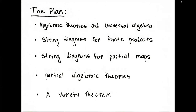The way we get from total maps to partial maps is by taking the string diagrams for finite products and modifying them to get string diagrams for partial maps. So after discussing universal algebra and algebraic theories, we'll cover string diagrams for finite products, then how we change them for partial maps, give some partial algebraic theories using this string diagrammatic syntax, and finally discuss what you can capture — that's the variety theorem.